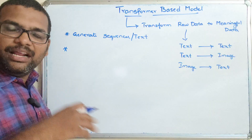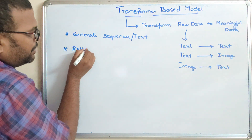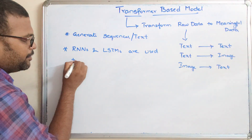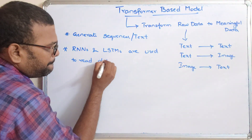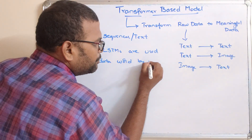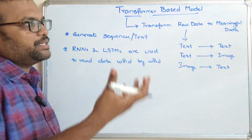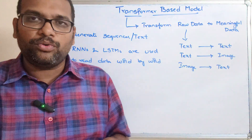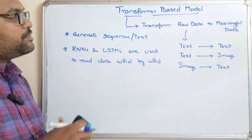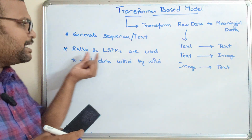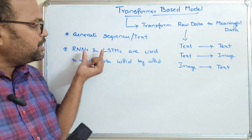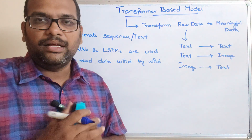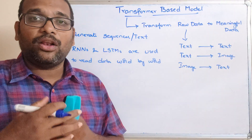Before transformer models, earlier models like RNNs and LSTMs were used to read the data word by word. If the raw data is text, the text is divided into different tokens — that means different words — and these previous AI models would read those words one at a time, not by the sentence. So obviously there would be difficulty understanding the longest sequences.